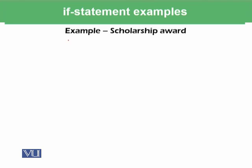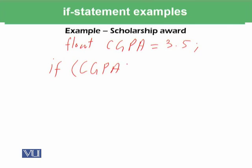For example, we have float CGPA equals 3.5. If we say if CGPA is greater than or equal to 3.0, then cout give scholarship.